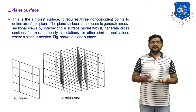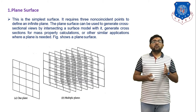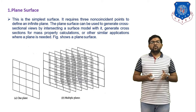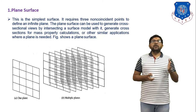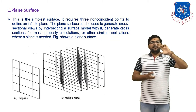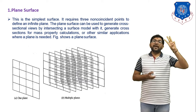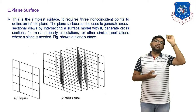What is the meaning of plane surface? This is the simplest surface. It requires three non-coincident points to define an infinite plane. The plane surface can be used to generate cross-section views by intersecting a surface model with it, and to generate cross-sections for mass property calculations and other similar applications. In a plane surface we require three non-coincident, meaning three different points, and the fourth point is automatically determined according to those three points.